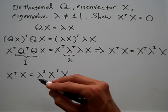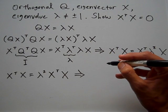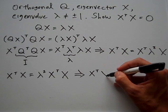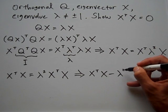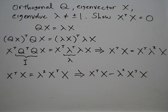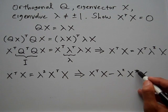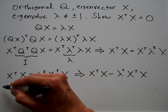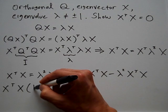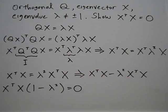Now let me move this to the left side of the equation. Using some elementary algebra, I have X transpose times X minus lambda squared times X transpose times X. I can factor out X transpose times X from both sides, giving me X transpose times X times (1 minus lambda squared) equals 0.